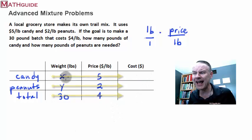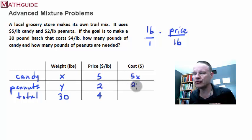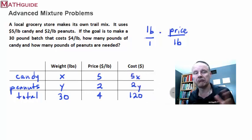So if I take X times 5, I'm going to get 5X. If I take Y times 2, I'm going to get 2Y. If I take 30 times 4, I'm going to get 120. And there you go. So this is the cost for the candy. This is the cost for the peanuts. And this is the cost for the total mixture. All right. So we're now going to use this table to further the explanation.